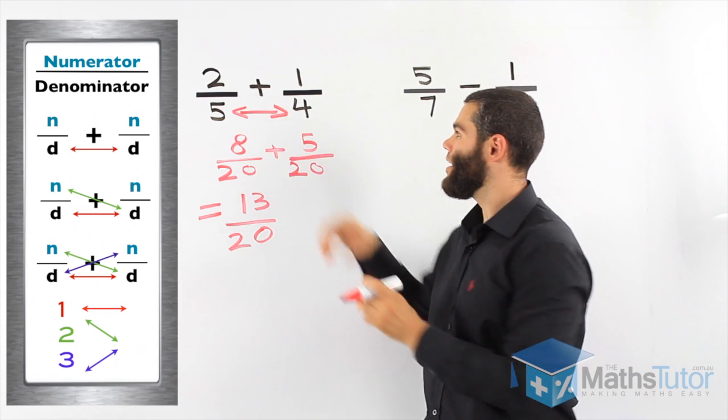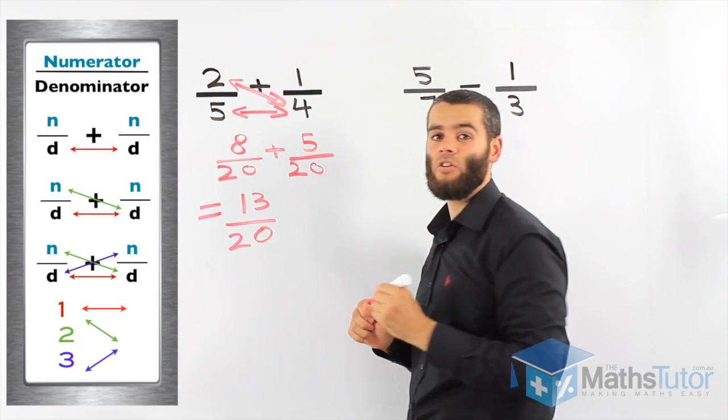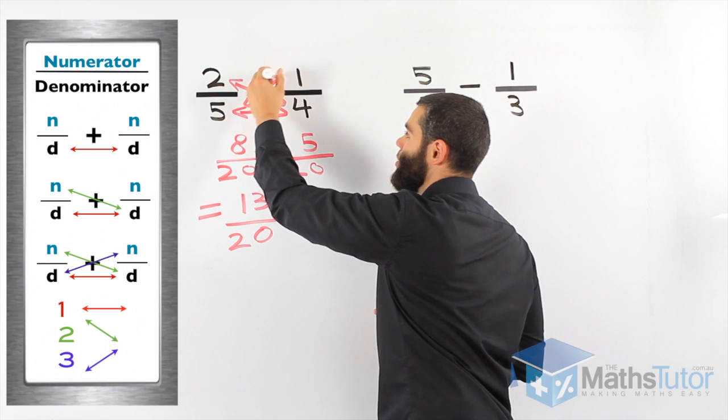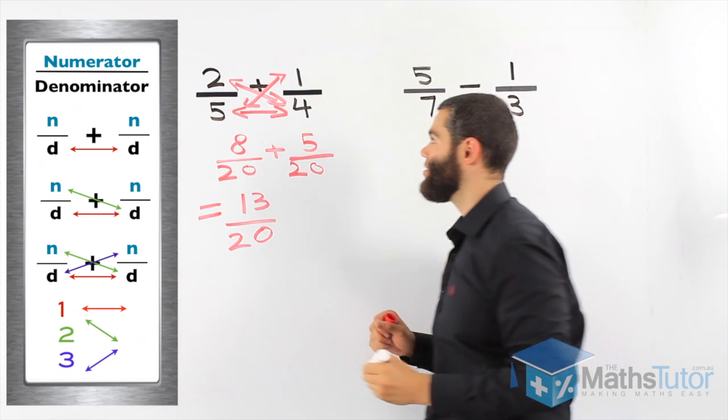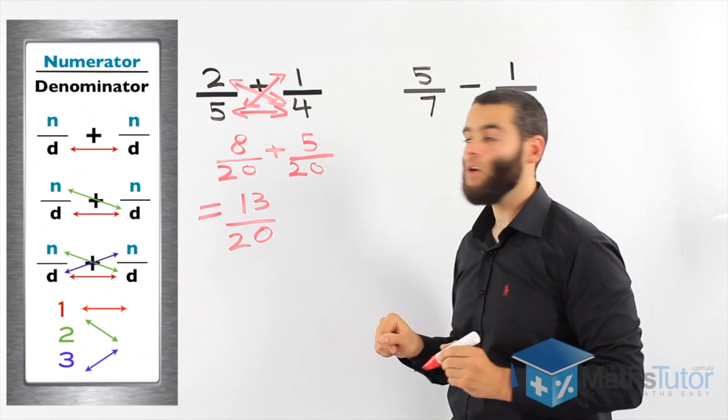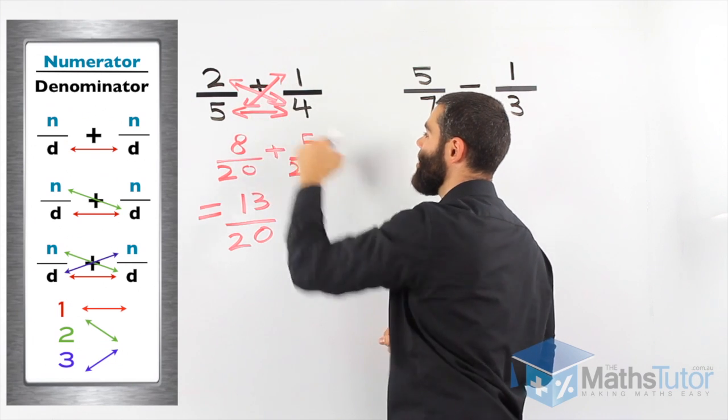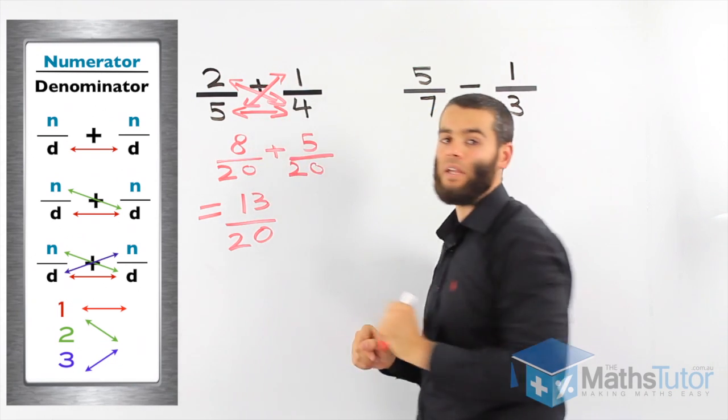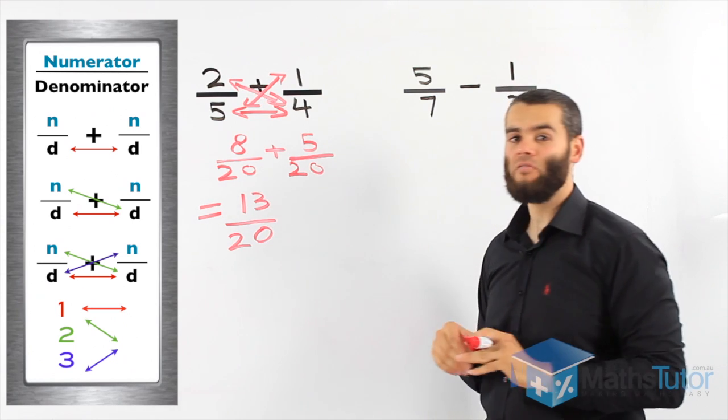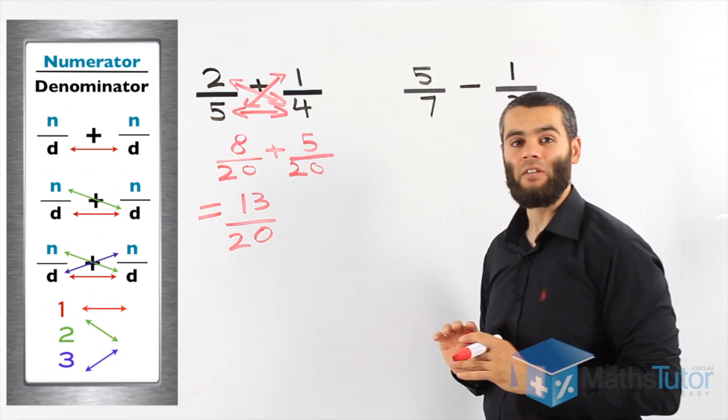Thirteen over twenty is our answer. We multiplied the denominators. Then, we multiplied the numerator with the second denominator. Then, we multiplied the second numerator with the first denominator. So, we have these arrows. Twenty is our common denominator. Four times two is eight. Five times one or one times five is five. Common denominators. Now, we can add eight plus five. Thirteen over twenty. We always ask, can we simplify? Well, in this case, thirteen over twenty, that is our answer. We can't simplify any further.